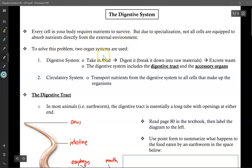So to solve this problem, two organ systems are used. The first is the digestive system. Its job is to take in food, digest it, which means to break it down into raw materials, and excrete the waste. Now, the digestive system includes the digestive tract and accessory organs. Meanwhile, the circulatory system is designed to transport the nutrients from the digestive system to all the cells that make up the organism.